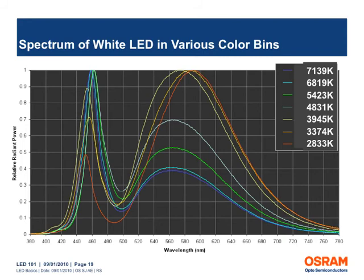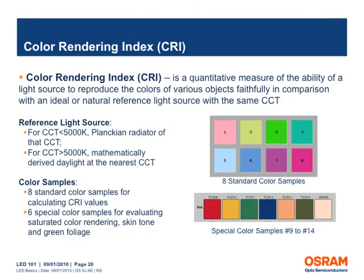This image shows the spectrum for various correlated color temperatures of white LEDs. By changing the phosphor content, it is possible to achieve different color temperatures of white light.